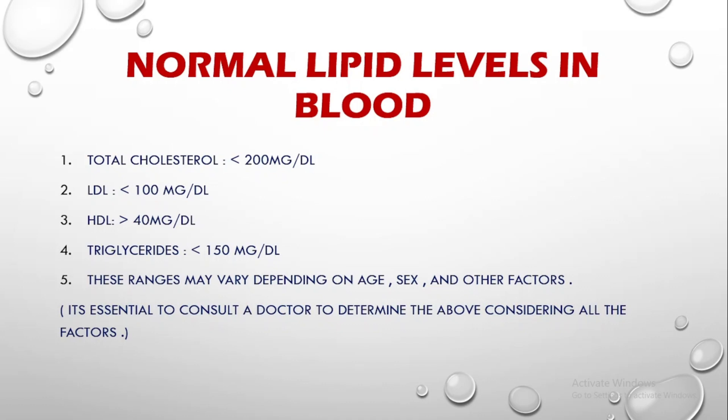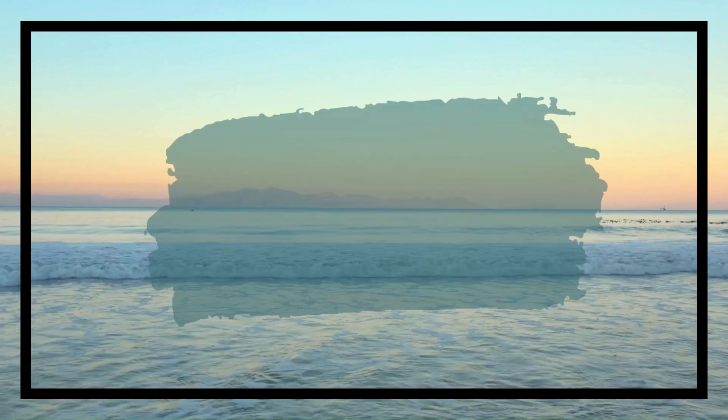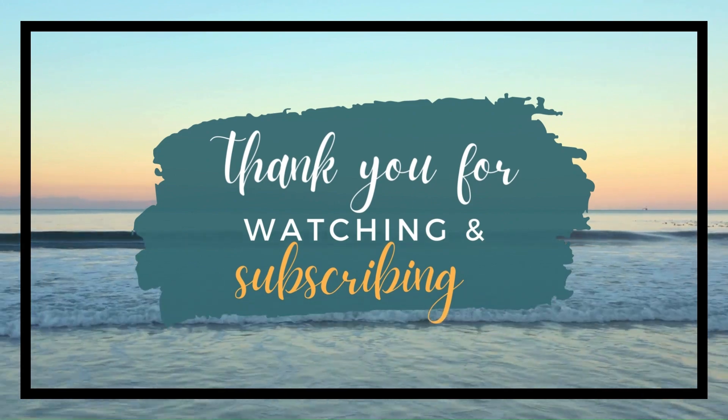Some normal lipid levels in the blood which should be on your fingertips: total cholesterol in the body should be below 200 mg/dL, LDL should be less than 100 mg/dL, HDL should be more than 40 mg/dL, and triglycerides should be less than 150 mg/dL. These ranges vary with age, sex, and lifestyle factors, so always consult your healthcare provider to determine the appropriate ranges. I hope you liked the content — do share your thoughts in the comment section. Till then, bye bye.